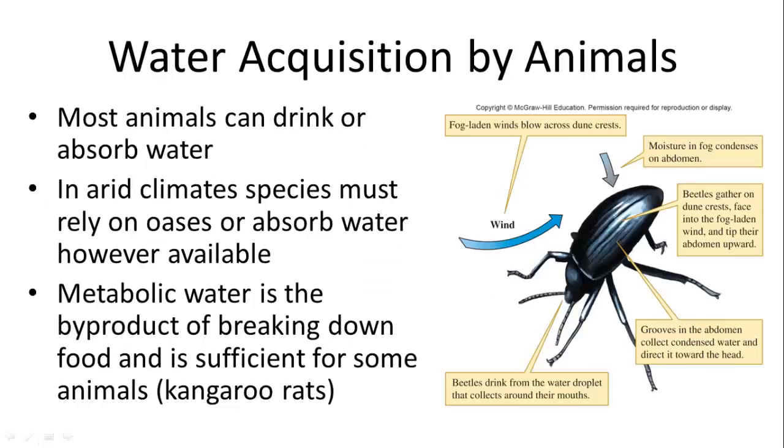Most animals can drink or absorb water and are just fine with that, but animals that live in arid climates have an additional challenge of finding water in a place where it doesn't rain very often. So they can absorb it, such as the example of this beetle, which will dig burrows, which will attract water vapor and fog as it comes in, and also have different ways to reduce water loss. Another source of water is metabolic water, which is the byproduct of breaking down food, and that's sufficient for some animals, such as kangaroo rats.